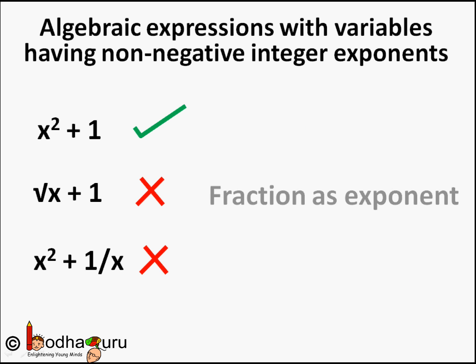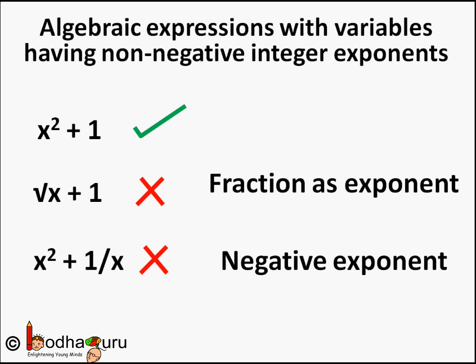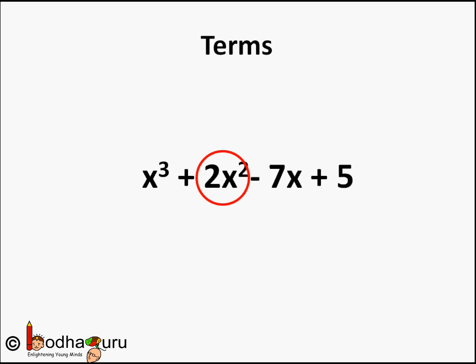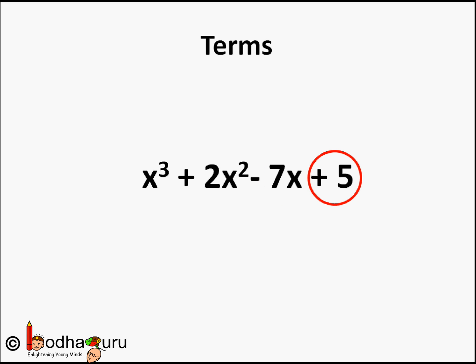So a polynomial is a very specific type of algebraic expression in which the exponents of all the variables are non-negative integers. The basic elements of a polynomial are the same as an algebraic expression. The parts of the polynomial separated by addition or subtraction operations are called terms. Like the polynomial x cubed plus 2x squared minus 7x plus 5 — here x cubed, 2x squared, minus 7x, and 5 are all terms. Remember, 5 is also a term, which is the same as 5 times x to the power 0, since x to the power 0 equals 1.